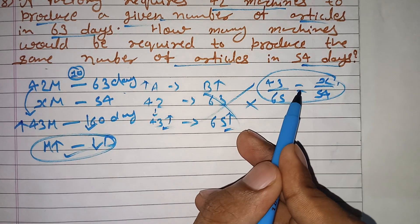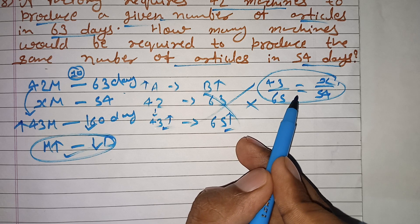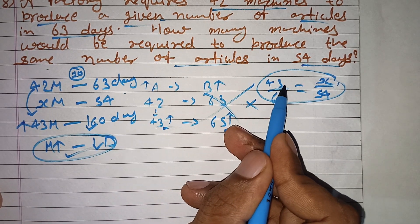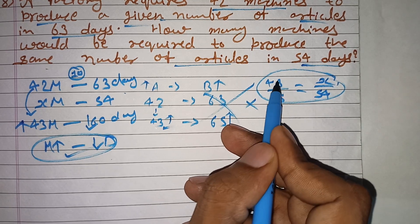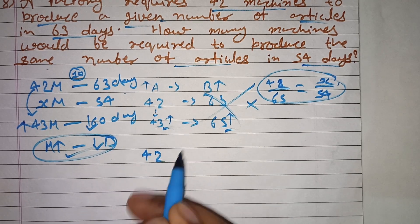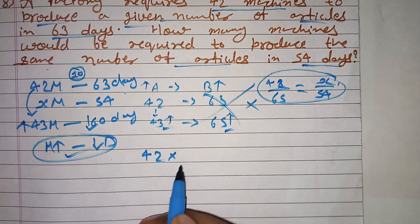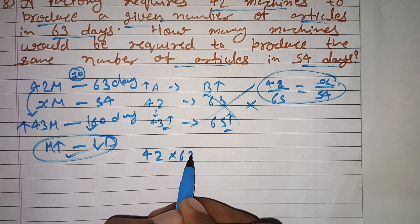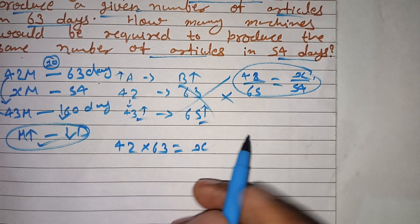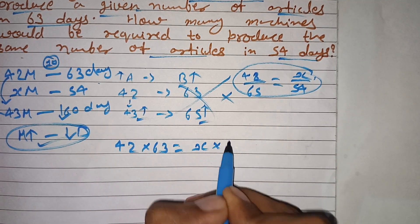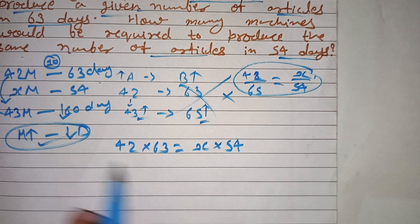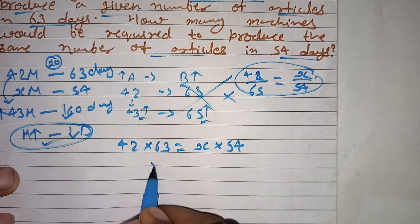Inverse proportion में direct proportion से थोड़ा अलग करते हैं। यहाँ पर 42 machines 63 days में articles बना रही हैं, और x machines 54 days में बनाएंगी। Inverse में divide की जगह multiply हो जाता है — opposite कर दिया। अब simply इसको solve करेंगे।